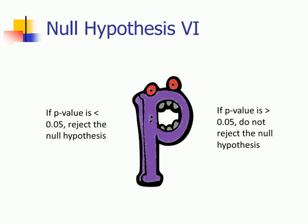So if your p-value is less than 0.05, reject the null hypothesis. If it's greater than 0.05, do not reject the null hypothesis.